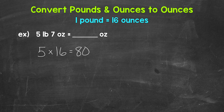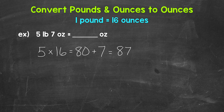Now we add the seven ounces to that. So we are combining our 80 ounces and seven ounces to see how many total ounces we have. 80 ounces plus seven ounces gives us 87 ounces. So five pounds, seven ounces equals 87 ounces.